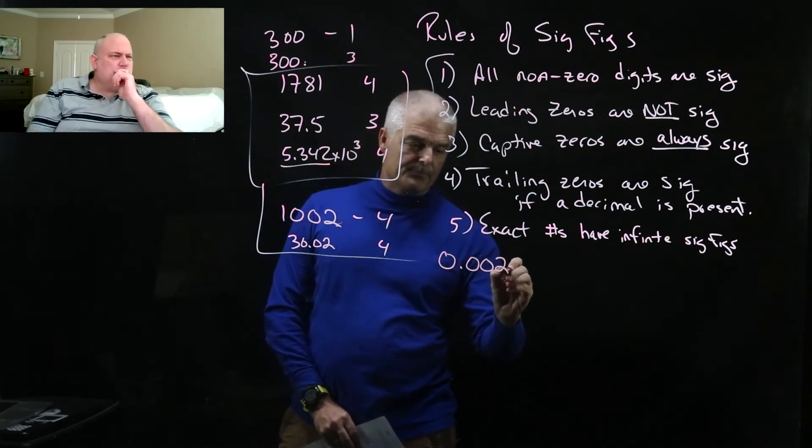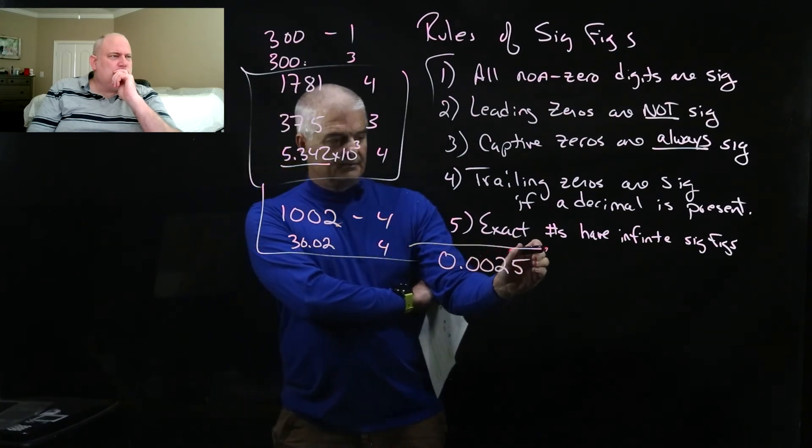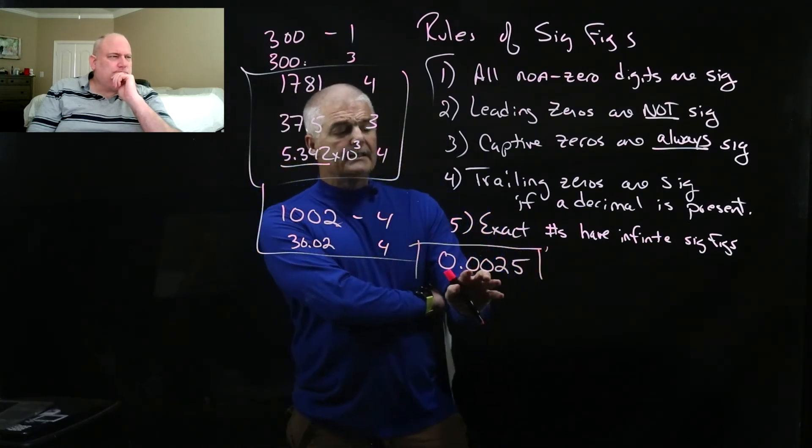Now the tricky ones I think most people struggle with is these ones. So this is called a what zero when I get 0.0025? Leading. That's a leading zero.